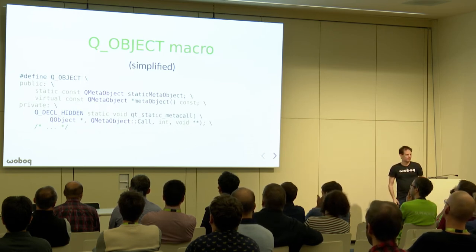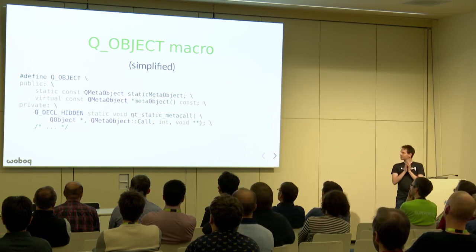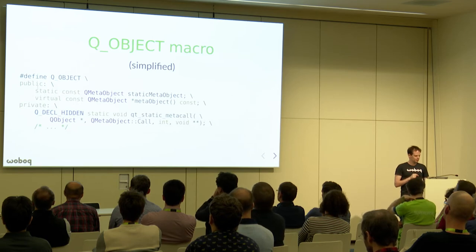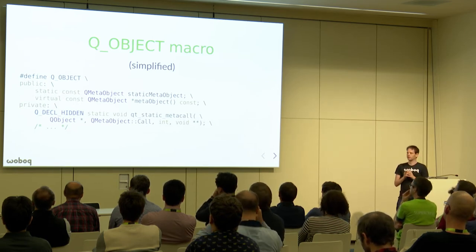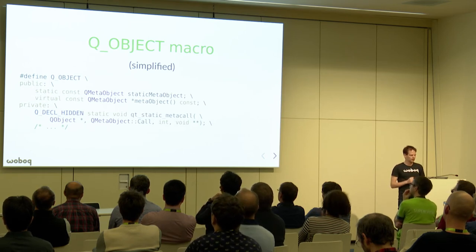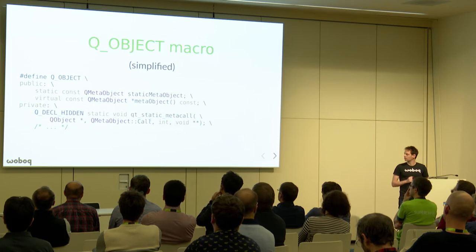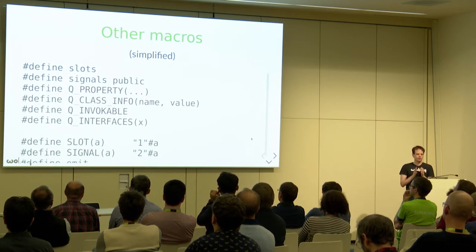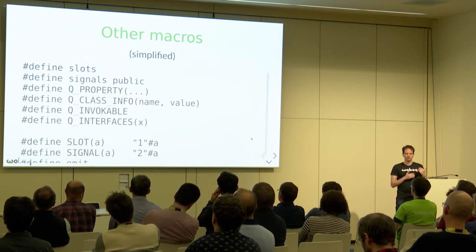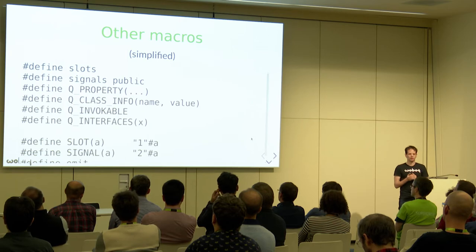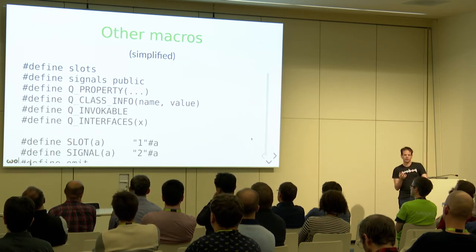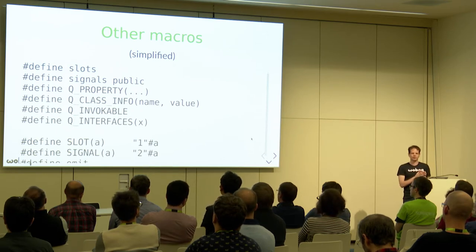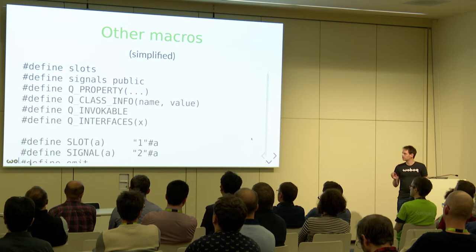The Q_OBJECT macro is not magic — it's a bit big, but the principle is clear. It declares a static meta object, which will be implemented by MOC, and a few virtual functions, which are also implemented by MOC. The generated code contains the implementations of those. All other macros are basically empty or very small. To the compiler, signals are just normal public functions, and slots are just normal functions as well. However, MOC sees those and treats them as attributes to know which properties, signals, and slots exist.